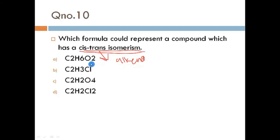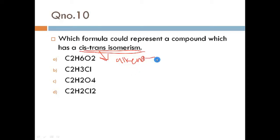Since this is MDCAT, you won't have time to draw all structures. Here is the hint: cis-trans isomerism occurs in alkenes and cycloalkenes. Since none of the options are cyclic, we check which one is an alkene. The general formula for alkenes is CnH2n.